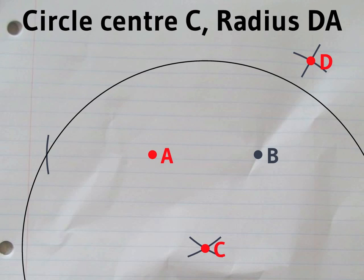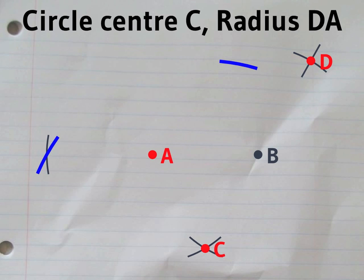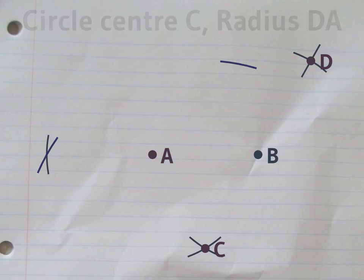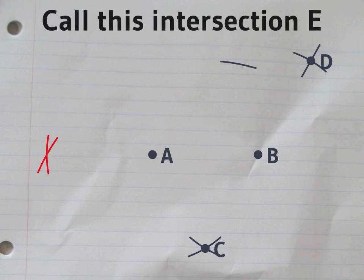Now, we need a big circle centered on C with radius AD. This meets the original circle at a point we'll call E.